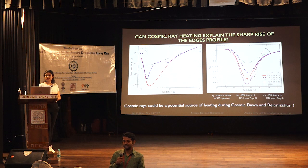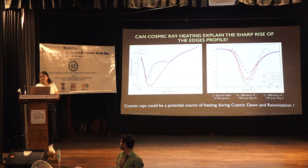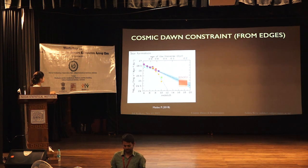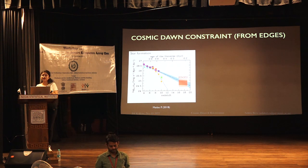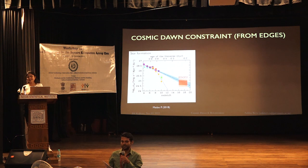A final question asks how the errors on rho UV are calculated when taking the linear extrapolation. The speaker explains that an empirical relation from Madau is used that takes into account the sigma and the measurement errors, and this empirical relation is adopted to propagate the uncertainty.